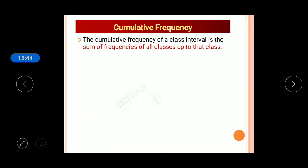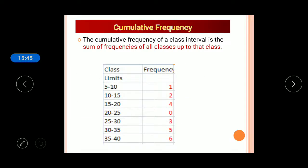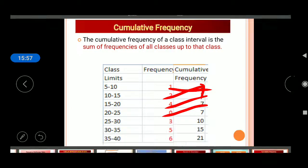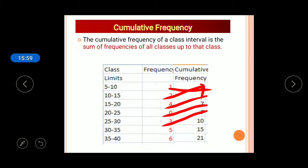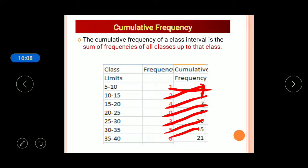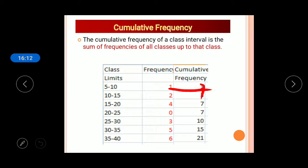Here is how to find cumulative frequency easily: the first class's cumulative frequency is the same as its frequency. Then add each frequency to the previous cumulative frequency — for example, 1+2=3, 3+4=7, 7+3=10, 10+5=15, 15+6=21. You simply add the current frequency to the previous cumulative frequency to get the next cumulative frequency.